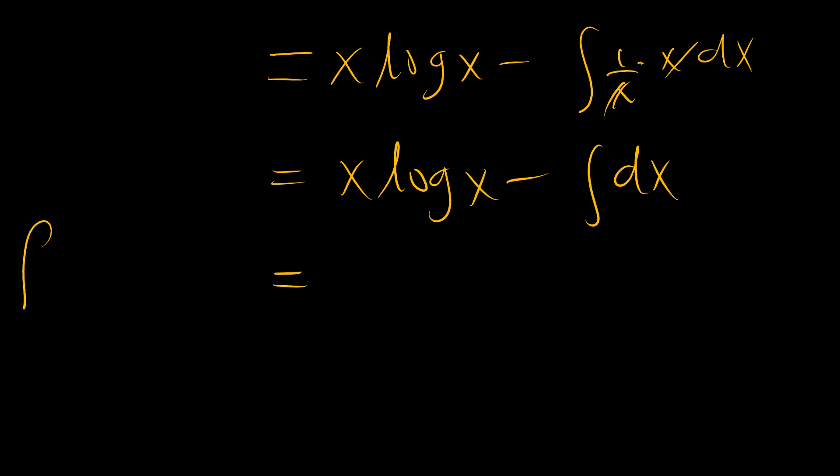So our integral is x log(x) minus the integral of 1/x times x. These cancel, so we have x log(x) minus the integral of 1, which means that the integral from x equals 0 to 1 of log(x) is equal to [x log(x) - x] evaluated from 0 to 1.